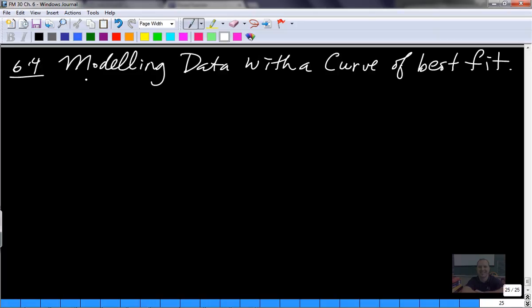Okay, so in 6.3 we modeled the data with a line of best fit, and so we are going to choose one of the other two types of functions that we've studied in this chapter. First one is a line, so if we have points, that's the one we just did, right?